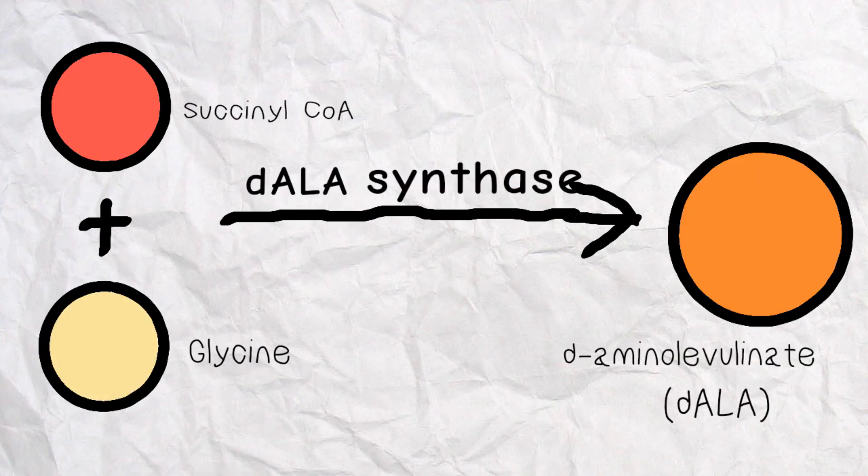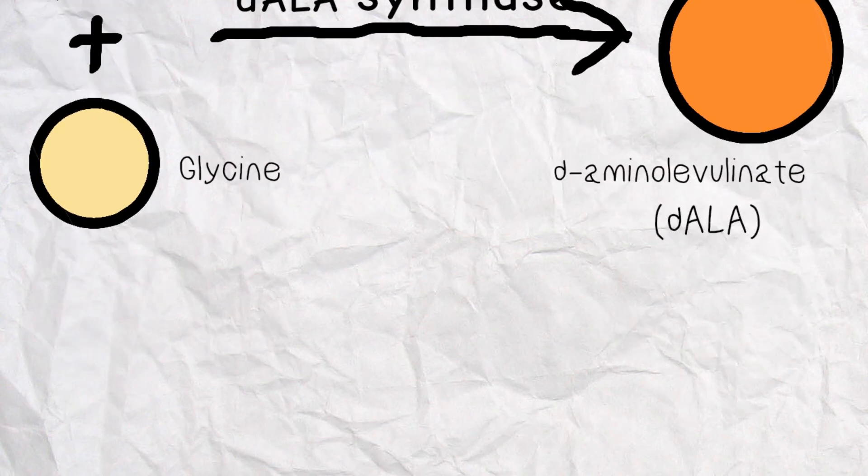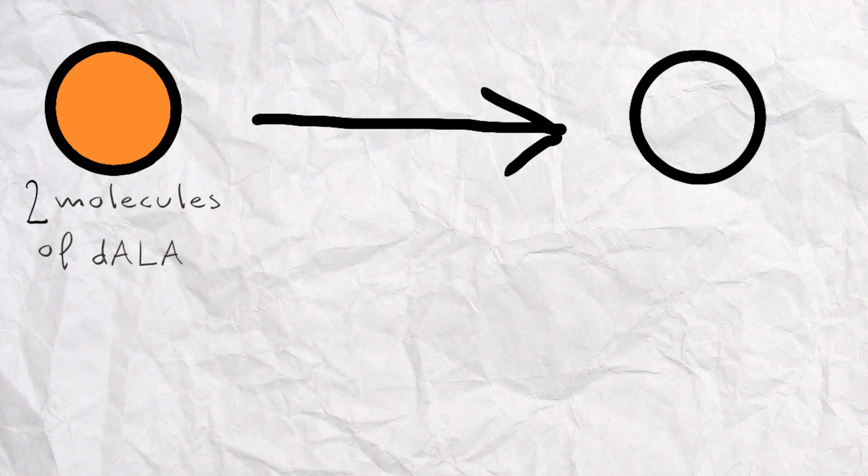Step 1: Succinyl-CoA and glycine will together form delta-aminolevulinate with the help of delta-ALA synthase. Step 2: Two molecules of delta-ALA will form PBG, which is porphobilinogen, with the help of delta-ALA dehydratase.